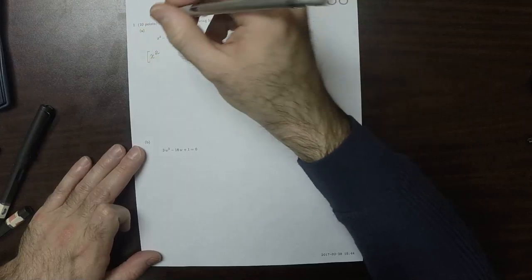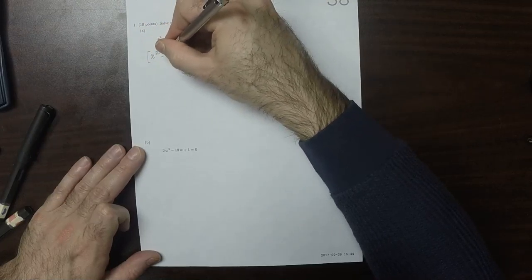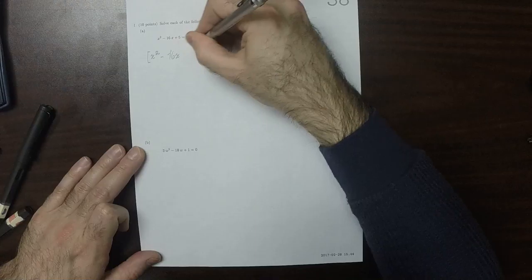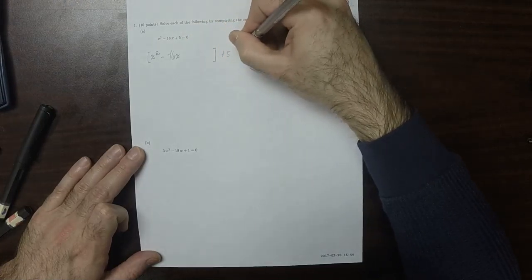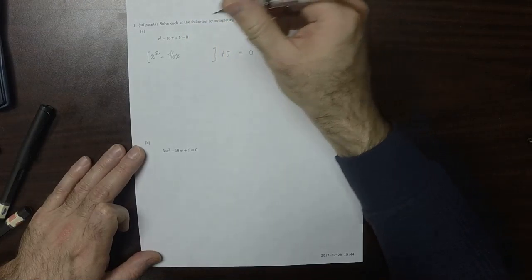So we'll group together everything with x. So x squared minus 16x plus 5 equal to 0.